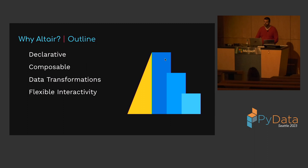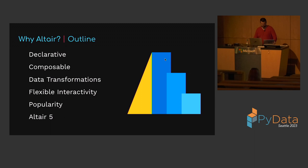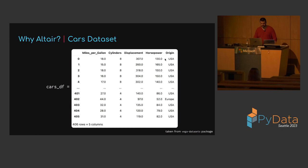The individual concepts that you learn can be freely combined to build up sophisticated charts from simple components. Altair includes a suite of built-in data transformations, which reduces the need to jump back and forth between pandas and your charting library as you're iterating on visualizations. This section is going to include several examples that reference this cars dataset from the Vega datasets package. This dataframe is going to be named cars_df. It has 406 rows with columns for miles per gallon, cylinders, displacement, horsepower, and country of origin — one of Europe, Japan, or USA.